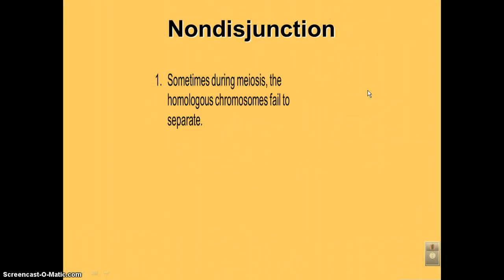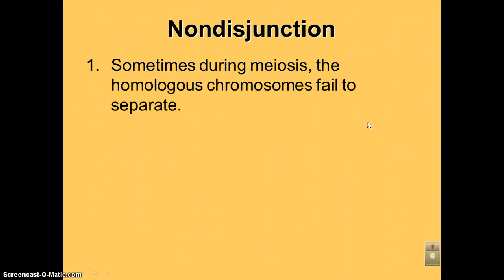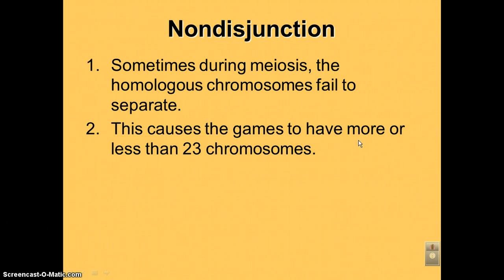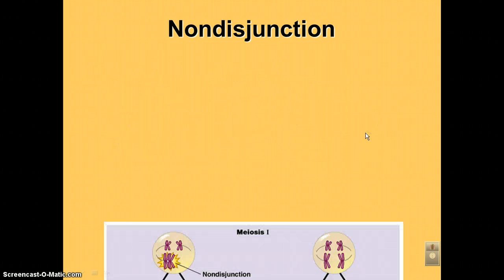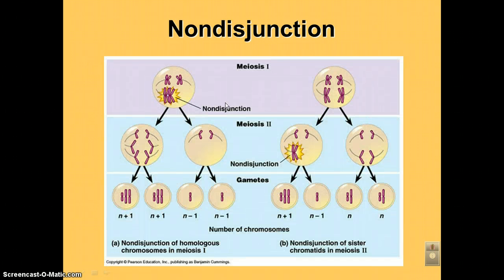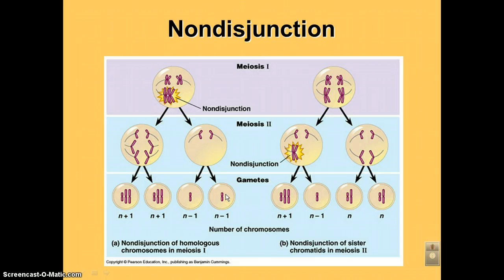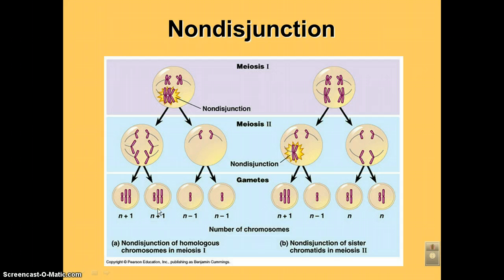Sometimes during meiosis the homologous chromosomes fail to separate, causing the gametes to have more or less than 23 chromosomes — N plus 1 and N minus 1. If non-disjunction occurs during meiosis I, all four haploid daughter cells at the end will have the wrong number of chromosomes. They're supposed to have two chromosomes each, but you can see N plus 1 has 3, another N plus 1 also has 3, and then N minus 1 and N minus 1.